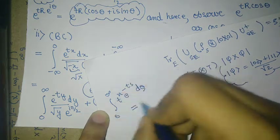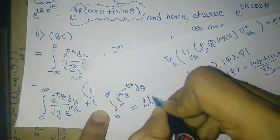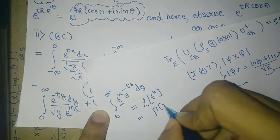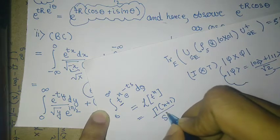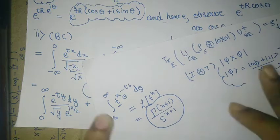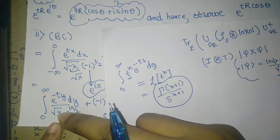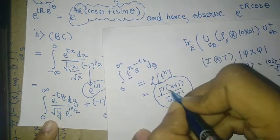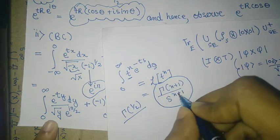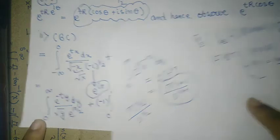0 to infinity t power n e power minus ts ds is this is the Laplace transform of t power n that is Laplace transform of t power n and it is equal to Γ(n+1) over s^(n+1). Now put n equal to minus half that will just solve this integral here. So that will give me what? That will give me Γ(1/2) divided by s power half.